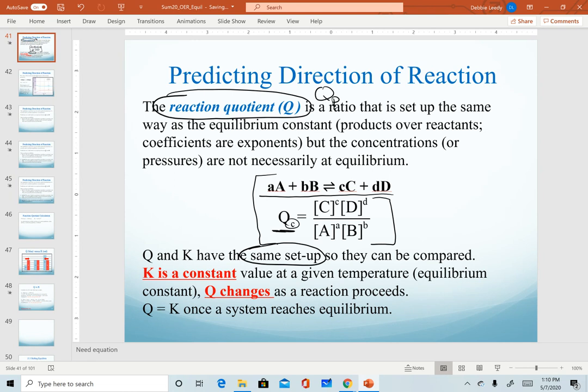And we do that so that we can compare the two quantities and then determine the direction a reaction has to go. Two very key things to recognize here. One is that K is a constant at a given temperature. So K is a set value for a given reaction, and a reaction will keep reacting until it reaches that ratio of products to reactants that gives us K.